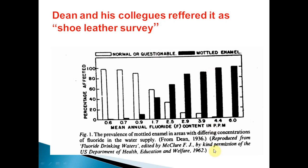The striking finding of the shoe leather survey was that as the ppm of fluoride increased, mottling also increased. At 0.6 ppm there was no mottling; at 0.9 ppm there was very mild mottling; and at higher levels like 2.5, 2.9, 3.9, and 4-6 ppm, high mottling was seen. They concluded that the presence of fluoride is directly proportional to the mottling of the enamel — the biggest conclusion of the shoe leather survey.